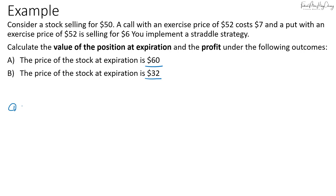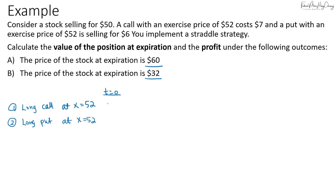Let's construct the portfolio. First, we have a long call at a strike of $52, and then we have a long put option at a strike of $52 as well. Initially at time zero, when you buy the call the value is $7 and when you buy the put the value is $6, so the initial value is $13.